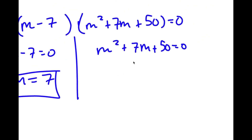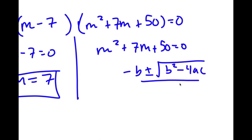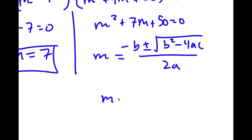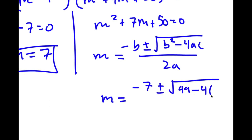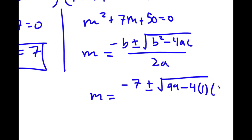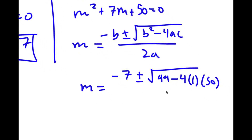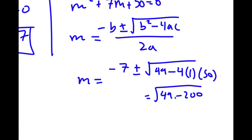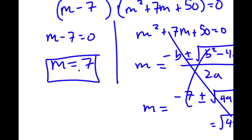For m squared plus 7m plus 50 equals 0, I use the quadratic formula: negative b plus or minus the square root of b squared minus 4ac, all over 2a. This gives negative 7 plus or minus the square root of 49 minus 4 times 1 times 50, which is 49 minus 200 — a negative number. Since we get a negative under the square root, this has no real solutions, so the only solution is m equals 7.